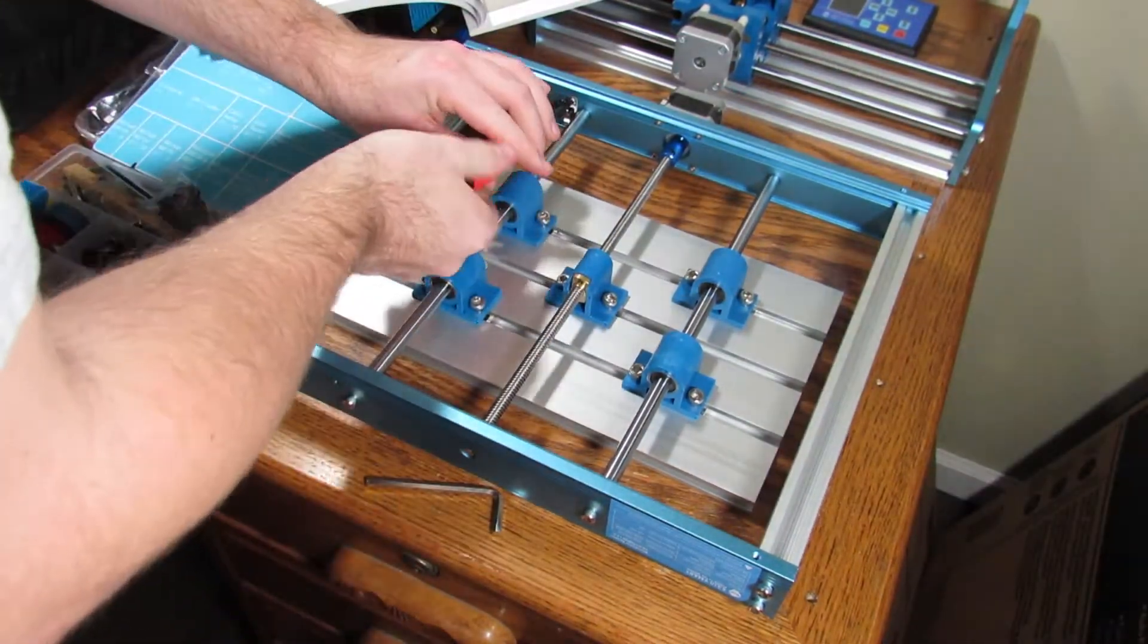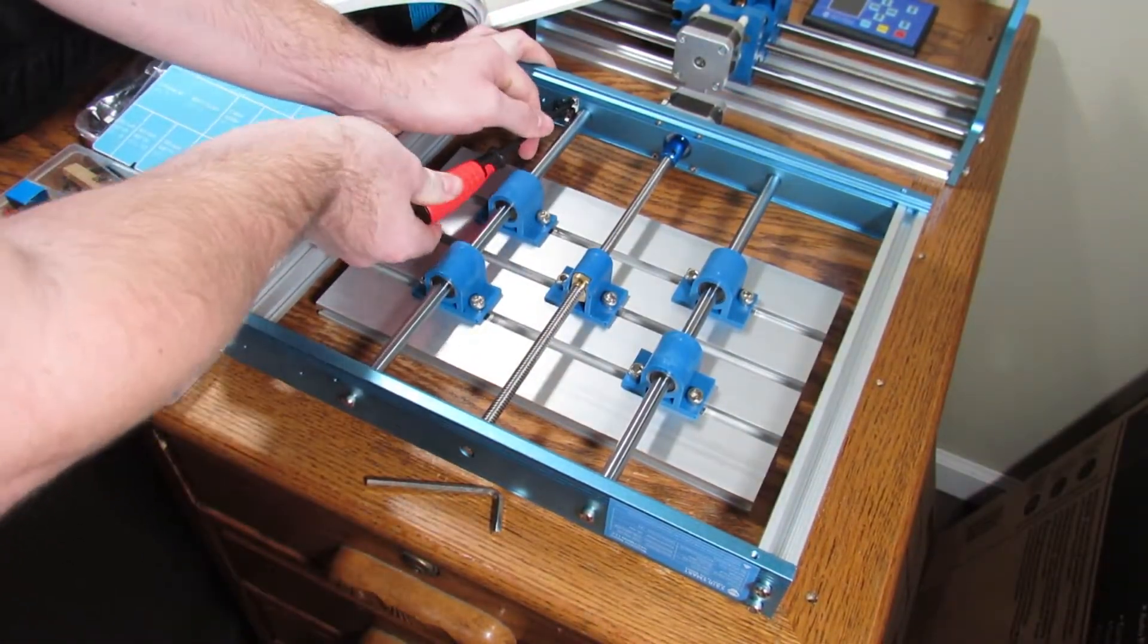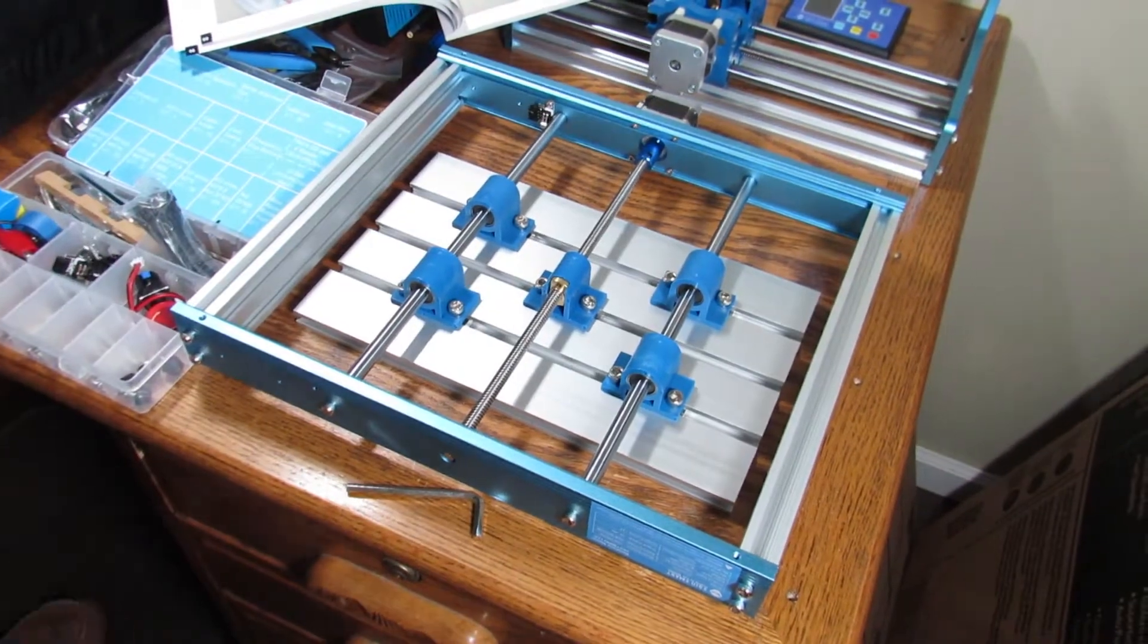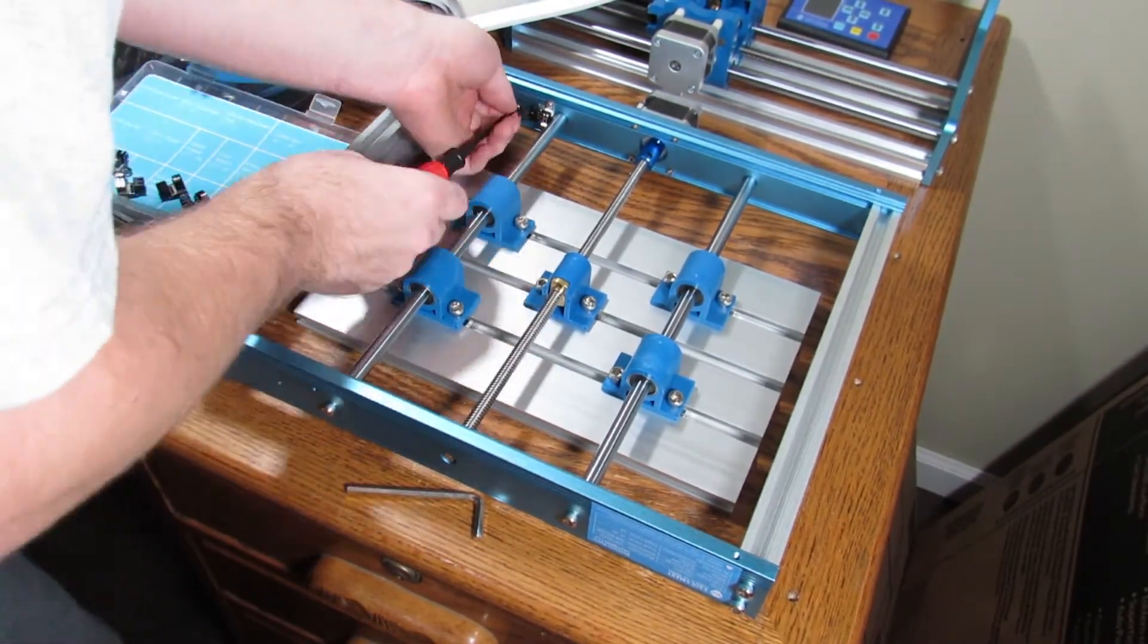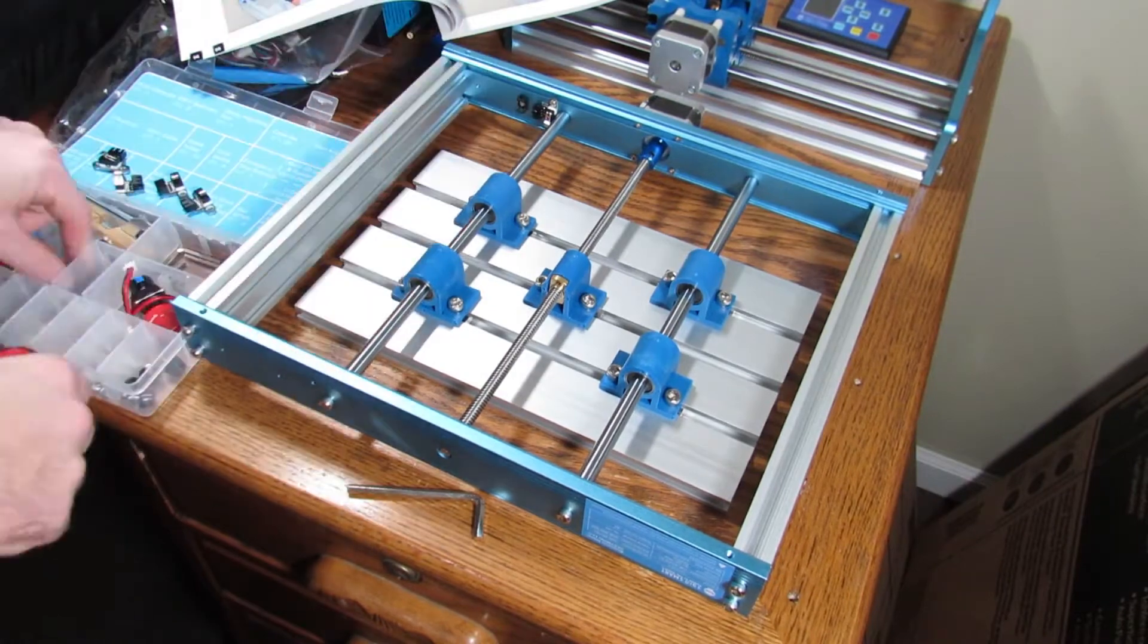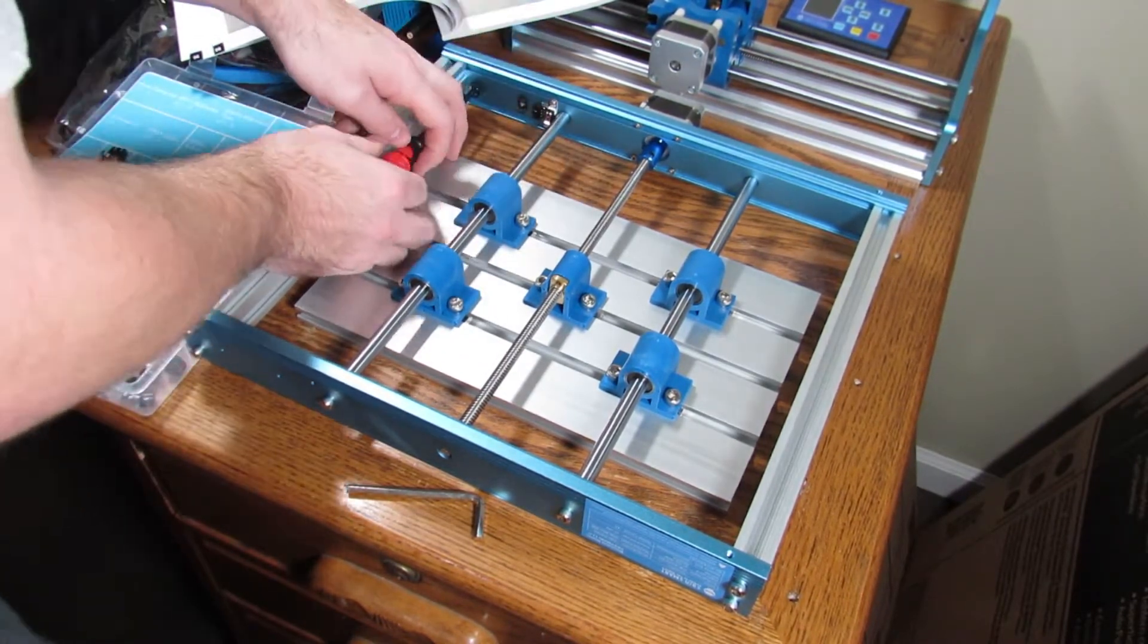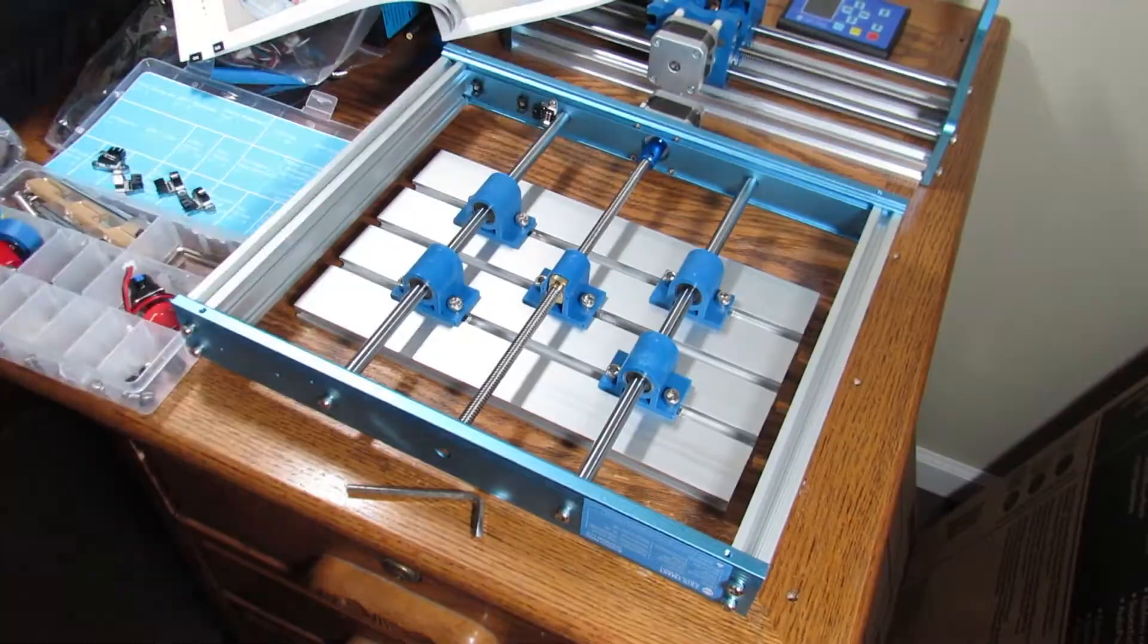Go ahead and install the two y-axis limit switches and then you want to double check. Make sure it clicks. Everything clicks. Everything's good to go. Then the two little holders there for cable ties. Later on we go ahead and organize everything. They just screw right in.